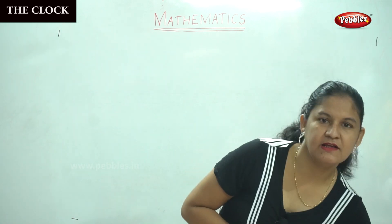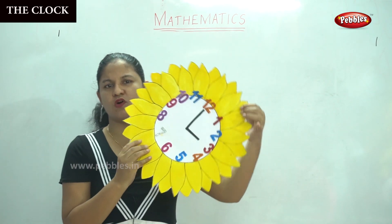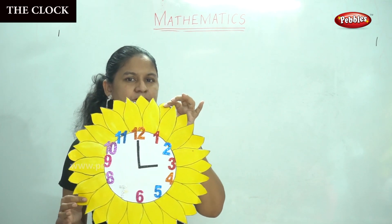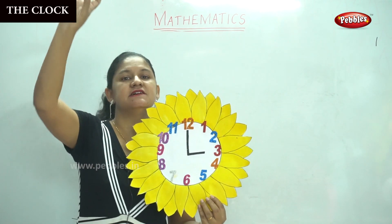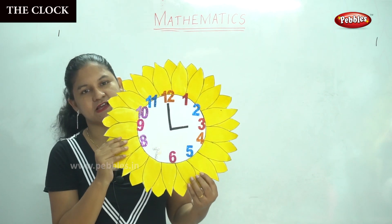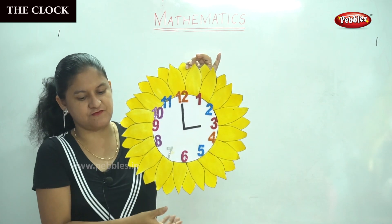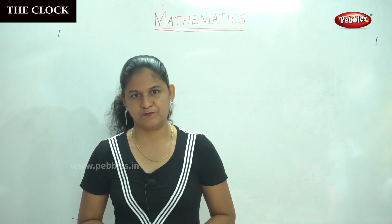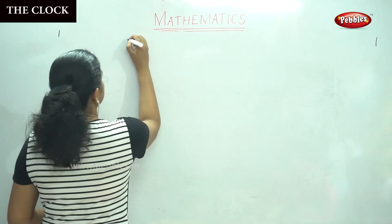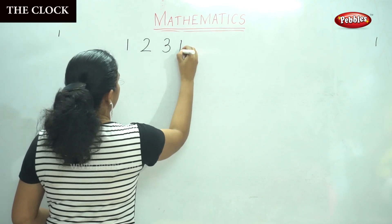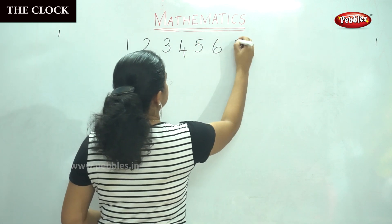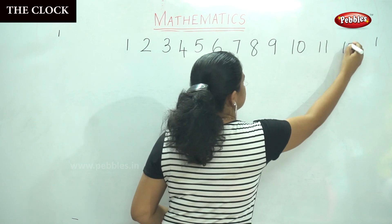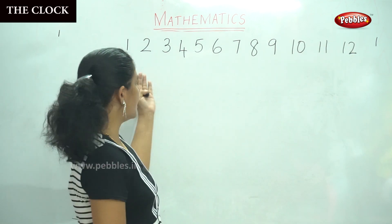So we have different shapes of clocks in our house. I am going to show you one different clock. Can someone tell me what shape is this clock? Yes, it is the sunflower. Have you seen a sunflower? The sunflower always looks towards the sun. So this is the shape of a sunflower, and I have made a clock in the shape of the sunflower. On the clock we have numbers from 1, 2, 3, 4, 5, 6, 7, 8, 9, 10, 11, 12.